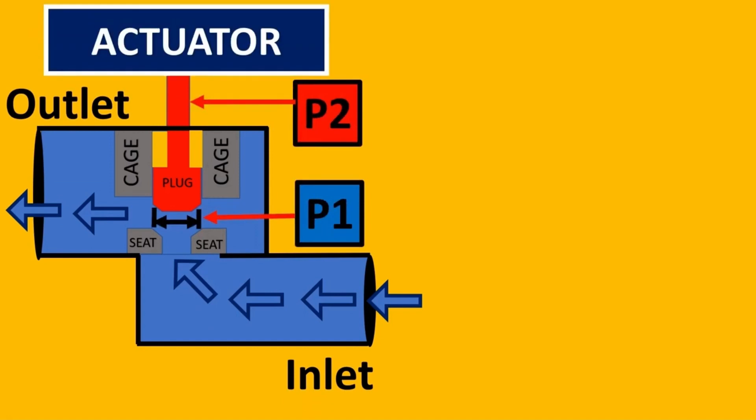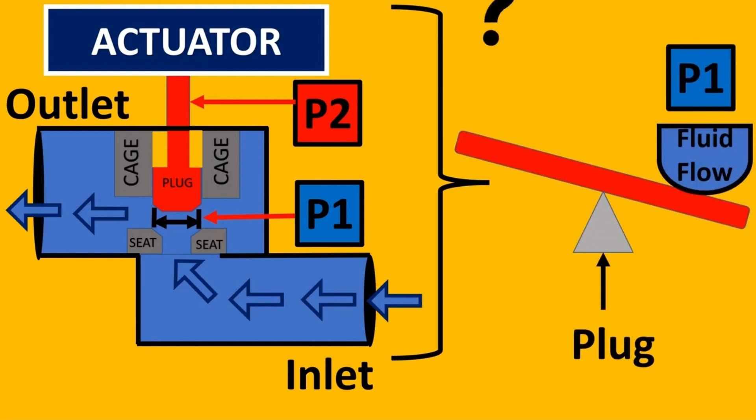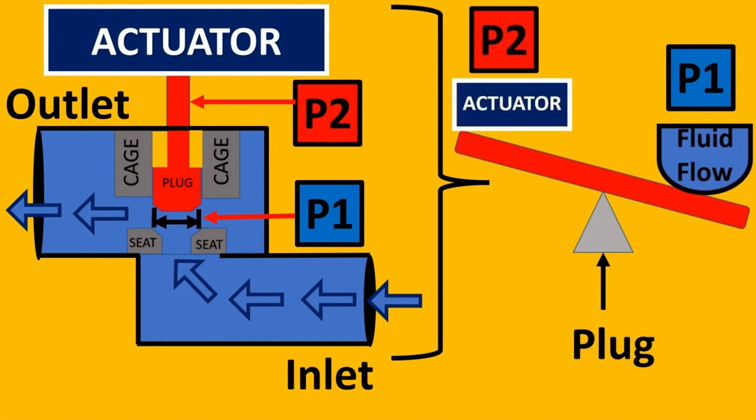On the other side there is force P2 from the actuator. Let us understand this with an example of a seesaw. So here imagine you have your plug and the seesaw has from one side the pressure which is P1, or the force which is acting from the fluid.